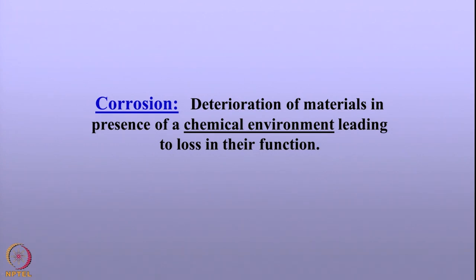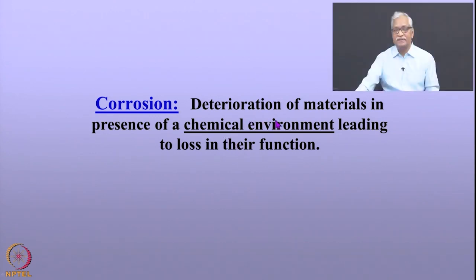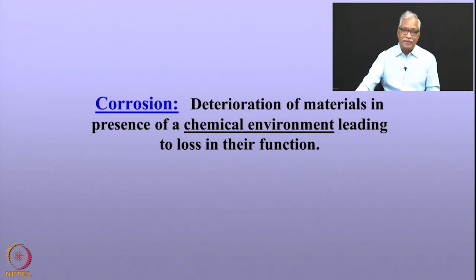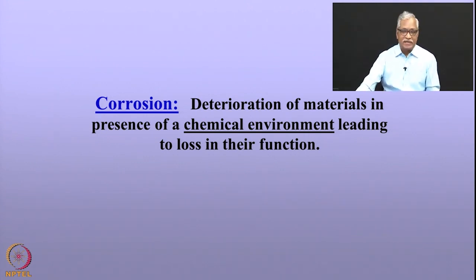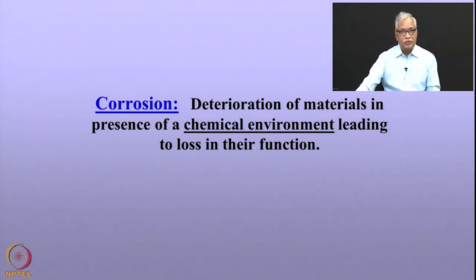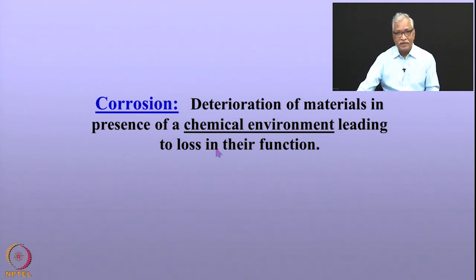I would like to emphasize that the failure is due to the chemical environment that the materials are exposed to. The failure can happen even otherwise — there can be mechanical failures, gamma radiation, fire — the structure can fail due to various reasons. But when we talk about corrosion, it is a chemical environment that leads to corrosion failures. When I say failure, it is not necessarily a structural integrity loss; it can also mean loss in the function of the desired component.